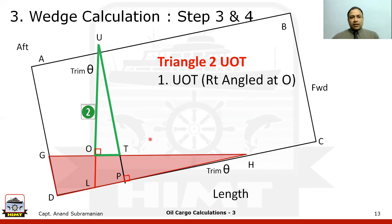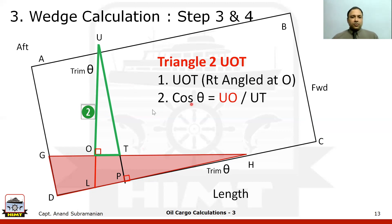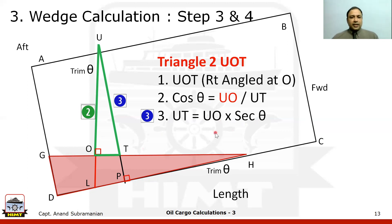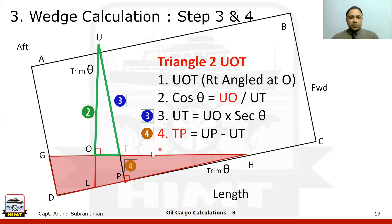Going further, in the next triangle UOT — right-angled at O — we already have UO from the previous step. Knowing angle theta, cos θ = UO / UT, so UT = UO × sec θ. We already have UP, which is the height of the tank plus the height of the ullage pipe. So TP = UP − UT. This is step 4 — the height of the oil parallel to the aft bulkhead, measured from the ullage port.